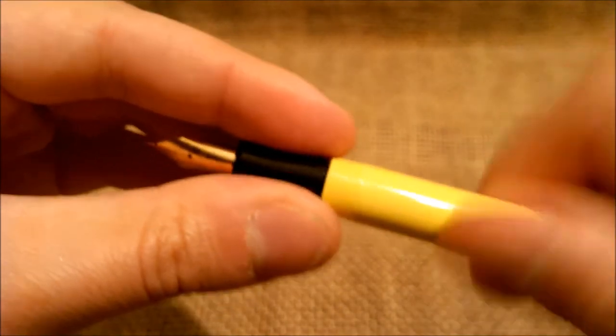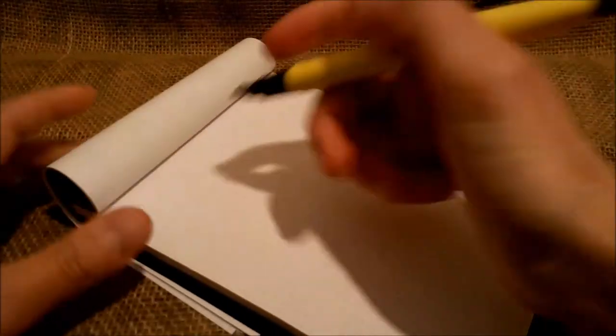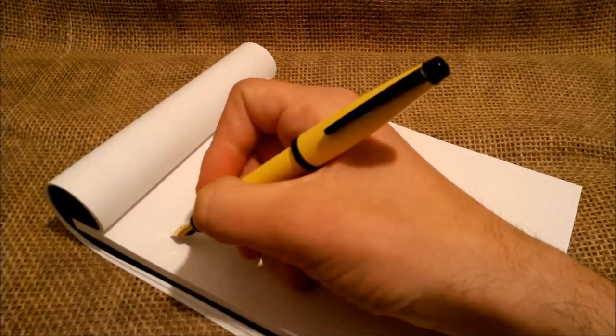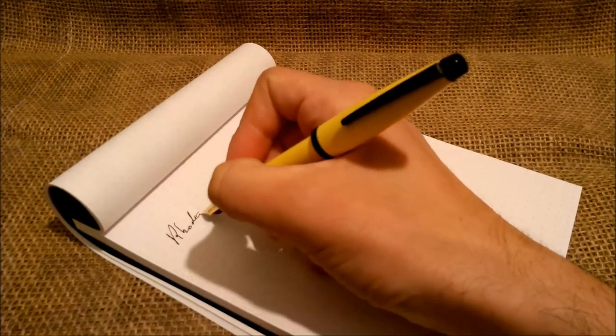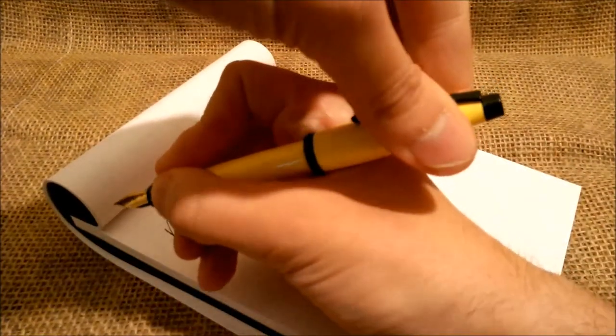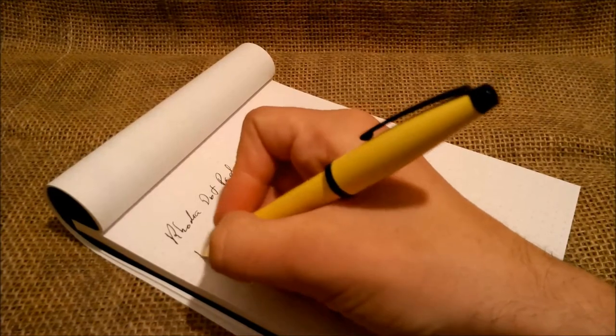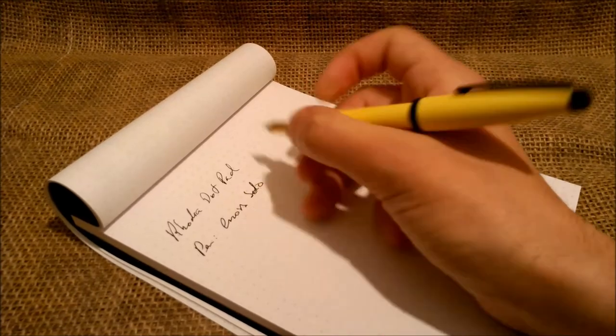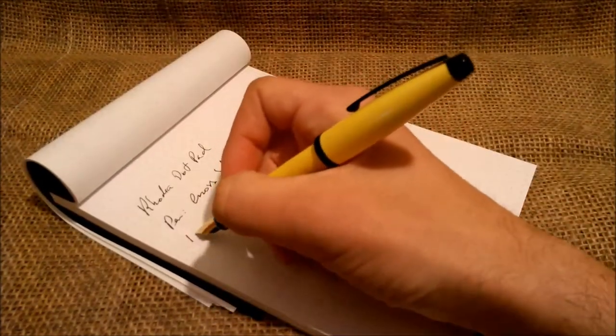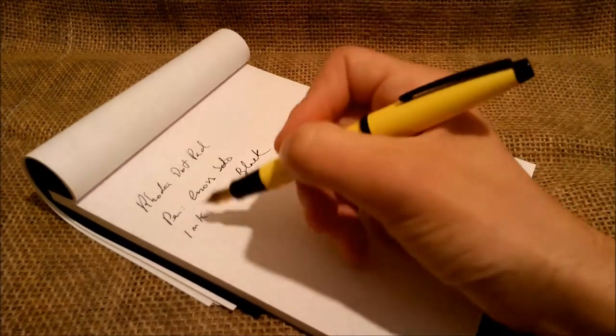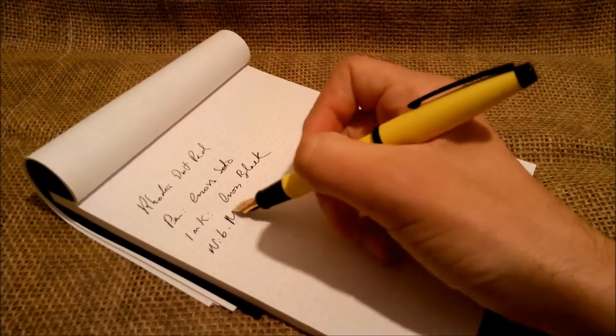So let's just show how this pen writes. The paper, as usual, is the Rhodia dot pad. Just let me put this straight up. The pen is Cross Solo. Solo. The ink is Cross black, and the nib is an M nib.